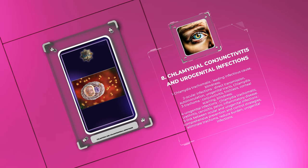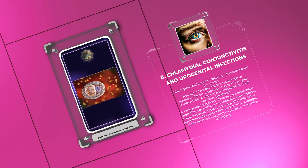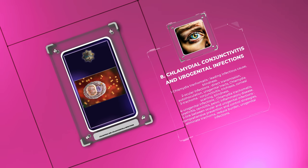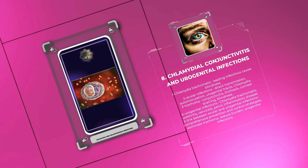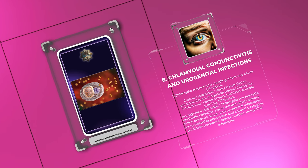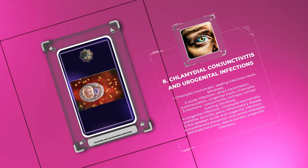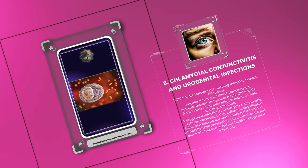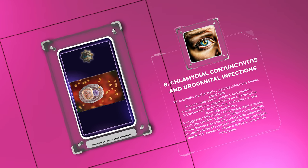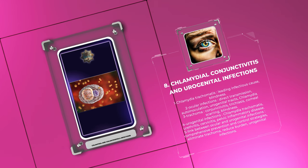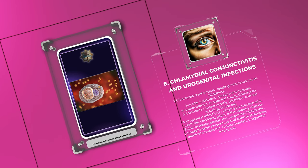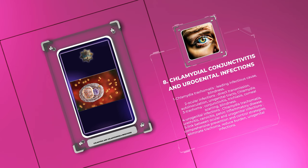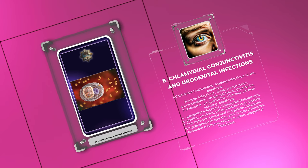Urogenital infections caused by Chlamydia trachomatis can lead to urethritis, cervicitis, and pelvic inflammatory disease. Understanding the link between ocular and urogenital infections is vital for implementing comprehensive prevention and control strategies to eliminate trachoma and reduce the burden of urogenital infections.